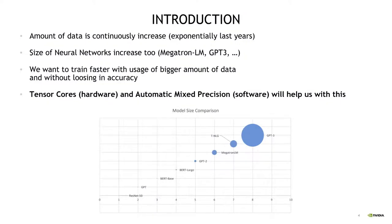Why are automatic mixed precision and Tensor Cores so important? The amount of data is continuously increasing exponentially, and the size of neural networks is increasing too — we have all heard about Megatron LM and GPT-3. We want to train faster with bigger amounts of data without losing accuracy. The hardware part, Tensor Cores, and the software part, automatic mixed precision algorithms, help us achieve this.